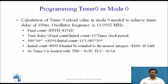Programming Mode 0, Timer 0: calculation of the Timer 0 reload value in mode 0 to achieve a timer delay of 100 microseconds with an oscillator frequency of 11.0592 MHz. In 13-bit mode, the final count is 1FFFH, which equals 8191 decimal. Time delay is 100 × 10⁻⁶. Initial count = final count (8191) minus initial count plus 1, multiplied by the timer clock period for 11.0592 MHz. This gives 8099.84, which rounds to 8100 decimal, or 1FA4H in hexadecimal. Therefore, Timer 0 should be loaded with TH0 = 1FH and TL0 = A4H.